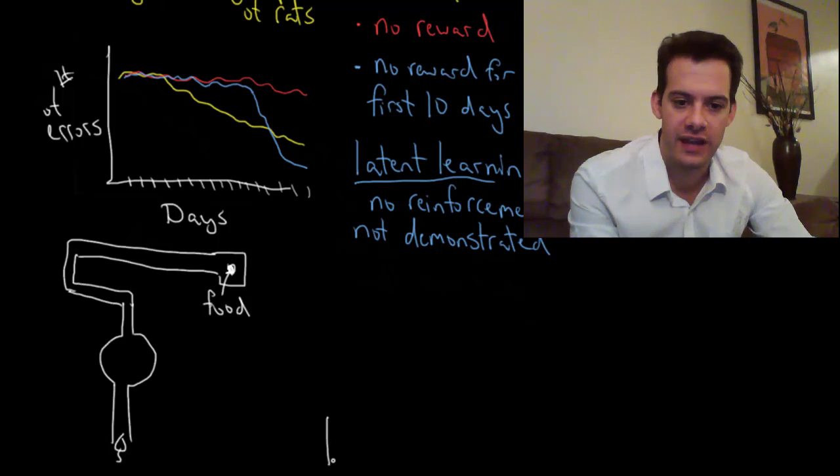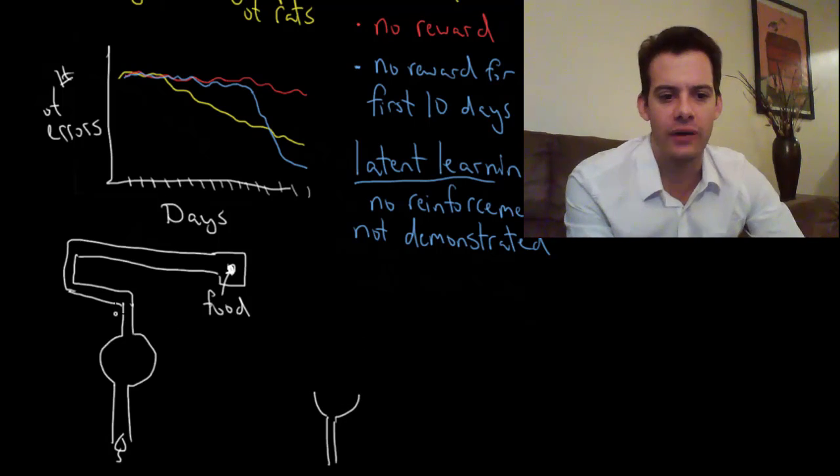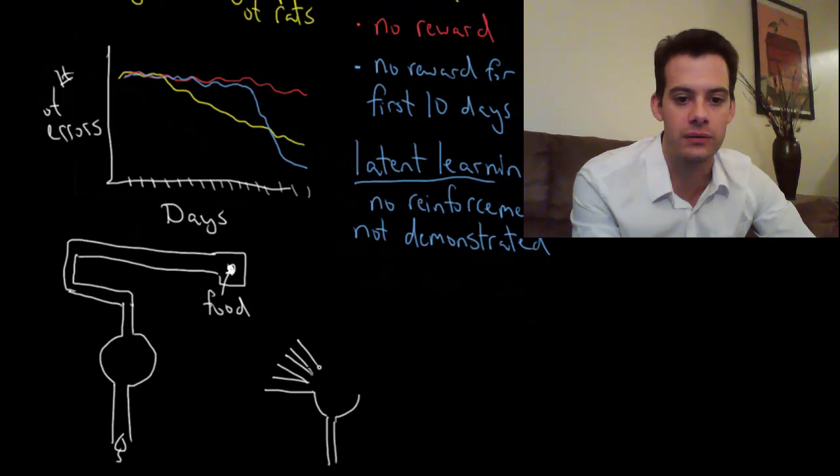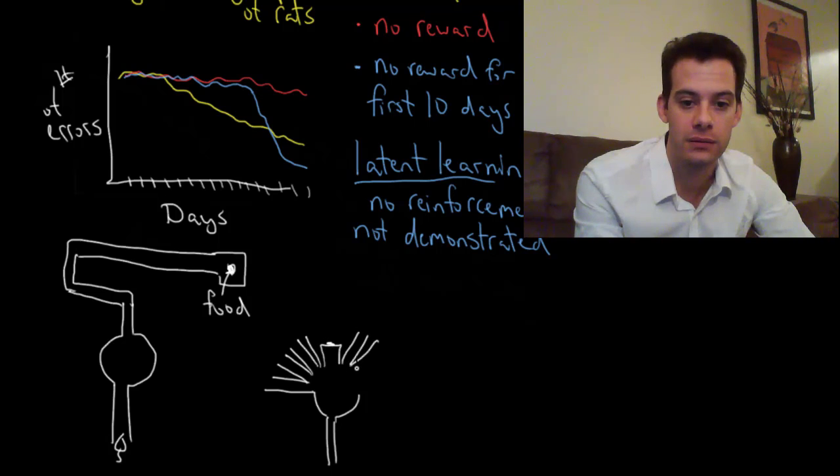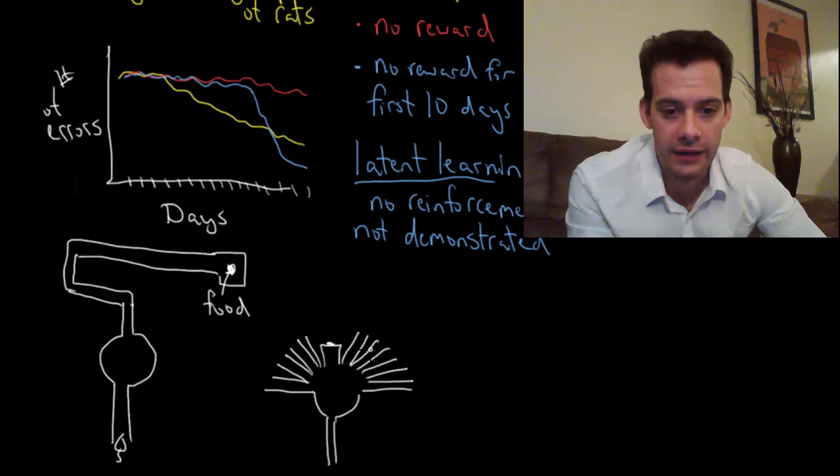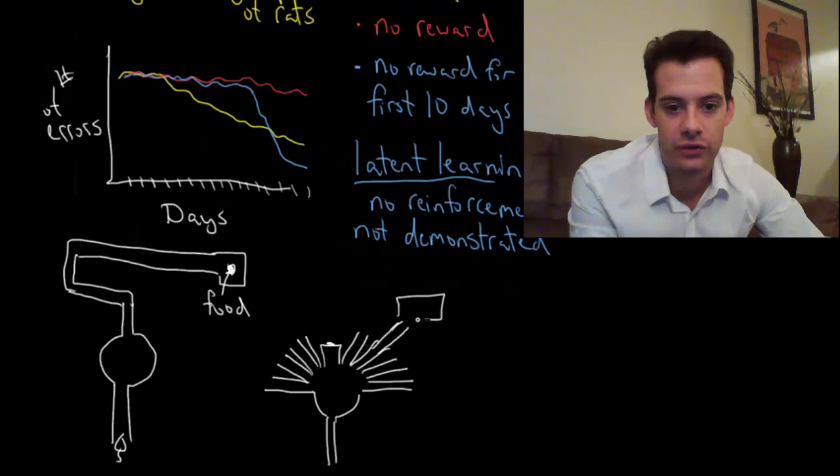It's the same entrance, same round room, but now instead of just one corridor there were many different corridors branching off in all directions. The straight ahead version that the rat had previously been taught was now blocked.